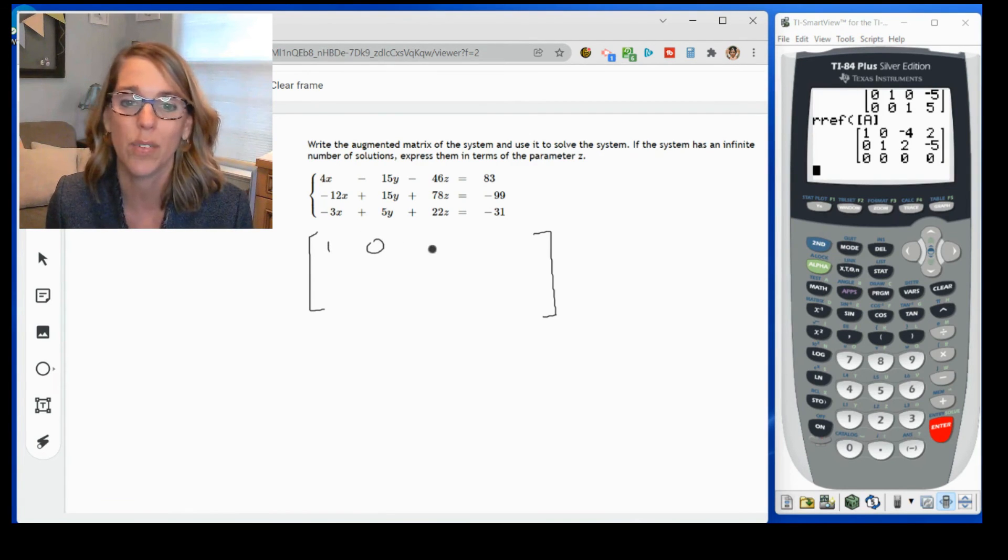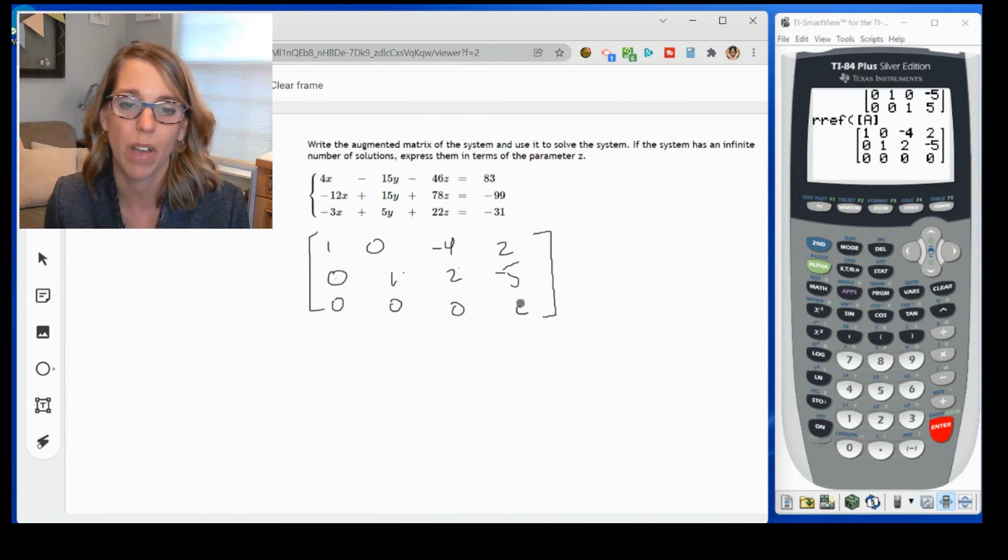I get a one, zero, negative four, two, zero, one, two, negative five, and then all zeros at the bottom.